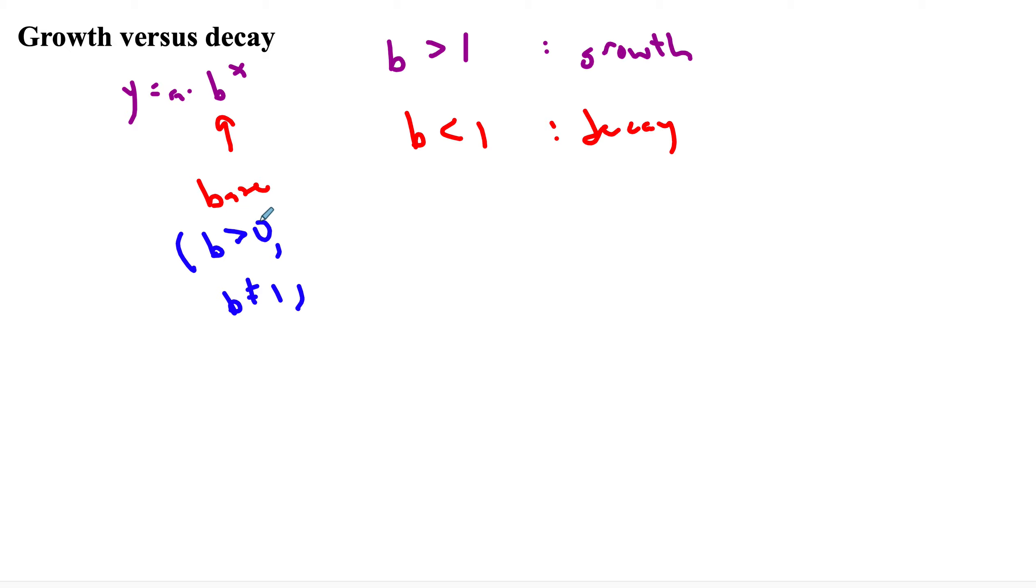It's not too much to think about, but in general, the base must be more than 0. It can't be equal to 1 because if I multiply by 1, nothing changes. So it turns out that's just a linear model, a horizontal line.